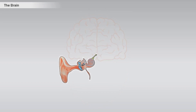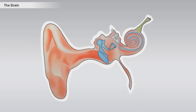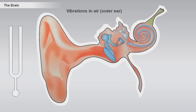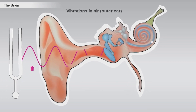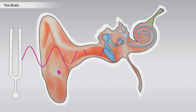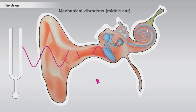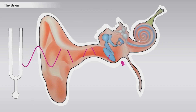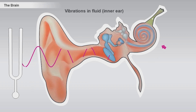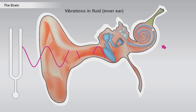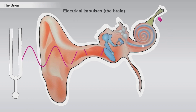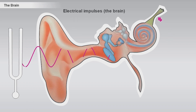This was an introduction to the hearing sense. We have seen how sounds start out as vibrations in the air, which are collected by the outer ear, transformed to mechanical vibrations in the middle ear, then into vibrations in the fluid system of the cochlea in the inner ear, and finally into electrical impulses sent to the brain.